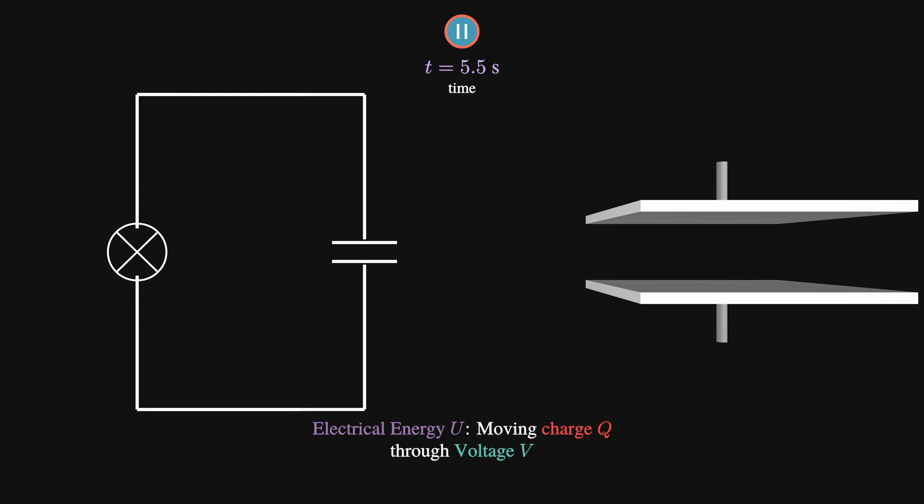But what is the voltage the charge moves through? After all, as we discussed in the last video, the charge in the plates and the voltage across them vary during the charging and discharging processes.